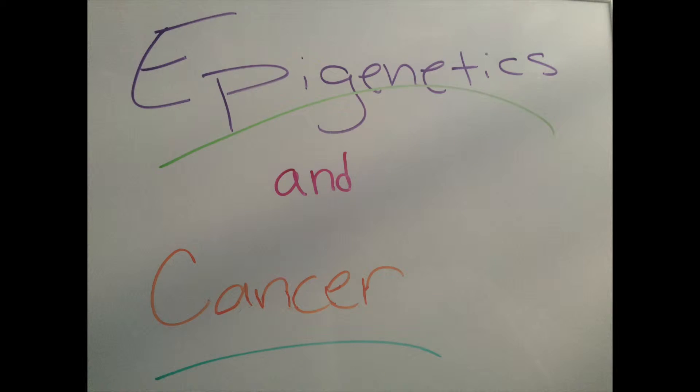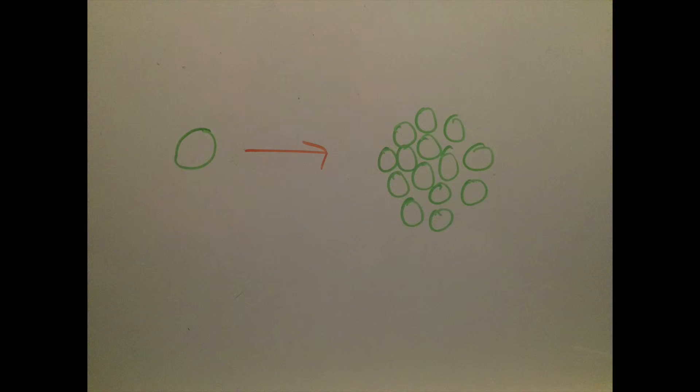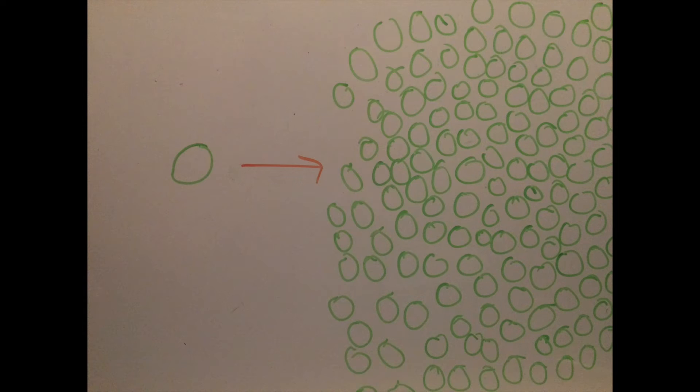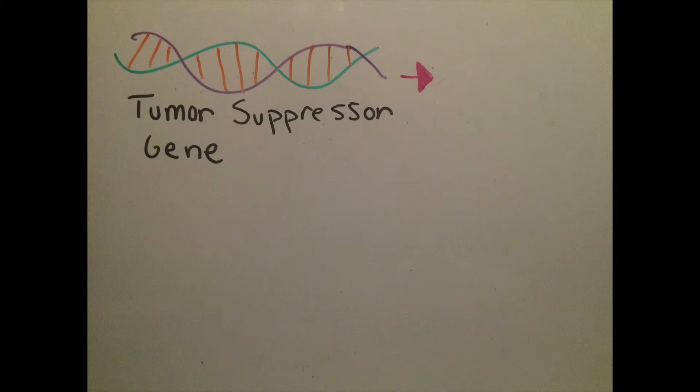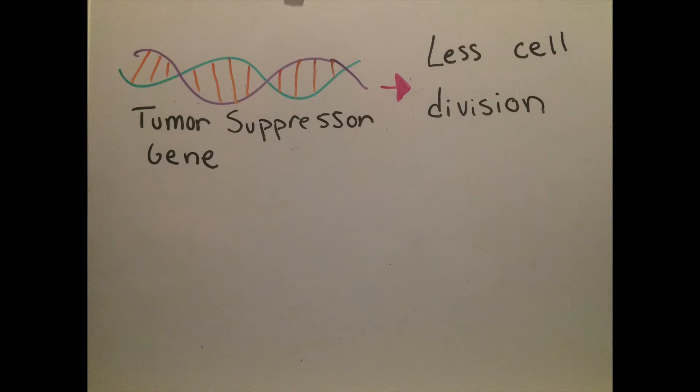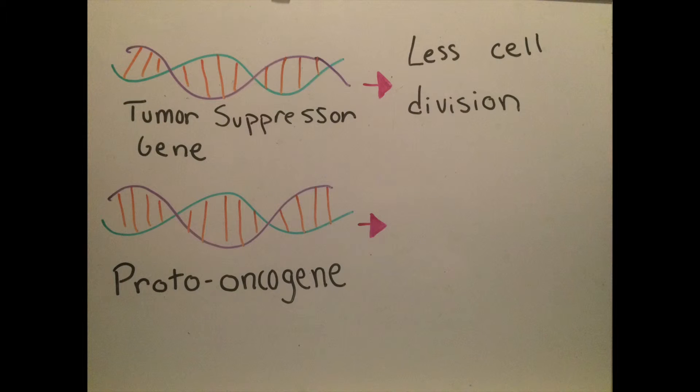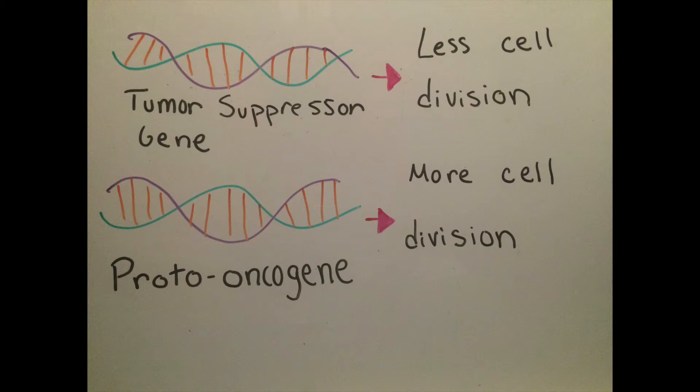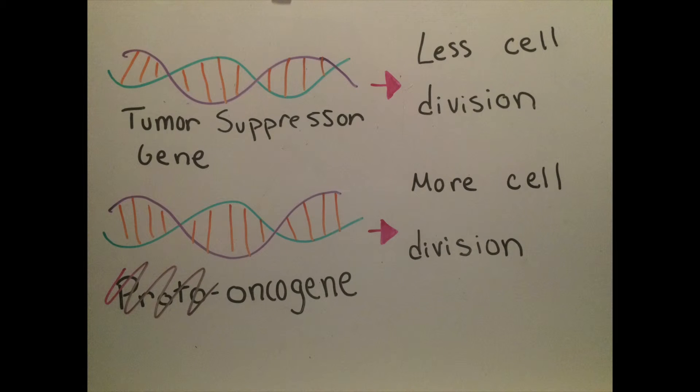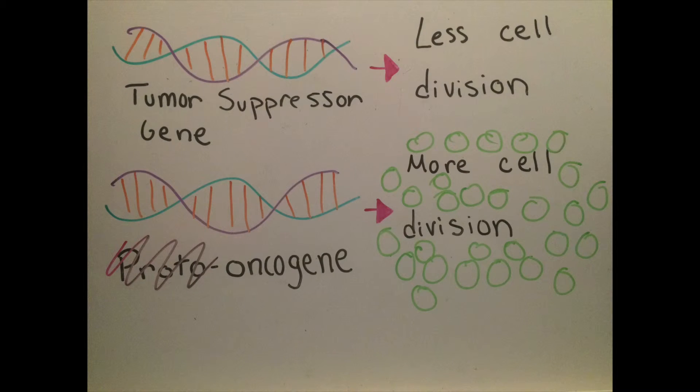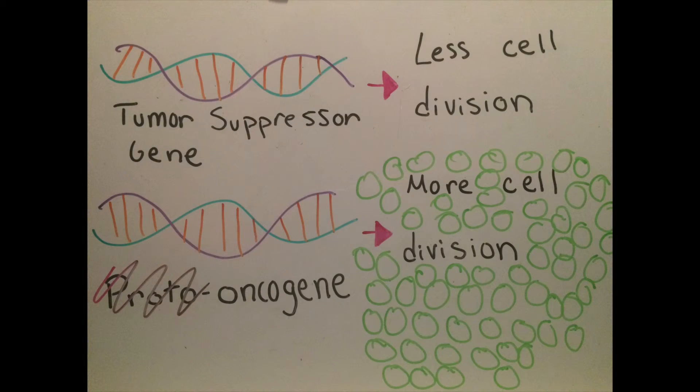Cancer is the uncontrolled growth of cells. The cells keep dividing and dividing and dividing without anything stopping them. Normal cells are regulated by tumor suppressor genes, which, when active, decrease cell division. Proto-oncogenes, on the other hand, increase cell division. Both are important for a healthy cell. However, many times a cancer cell will contain an oncogene, which is an overexpressed proto-oncogene that leads to excessive cell division.